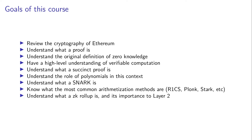So, what are the goals of this course? We are going to start with some cryptography to make sure we are on the same page. I want you to understand what exactly a proof is, what the word proof means, and to understand the original definition of Zero Knowledge. You will have a high-level understanding of verifiable computation — in particular, what a succinct proof is. You'll understand the roles of polynomials in this context, what the word SNARK means, and at the end we will discuss arithmetization methods such as R1CS, Plonk, Stark, etc. We will also discuss the idea of a Zero Knowledge Virtual Machine.